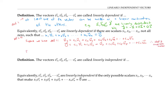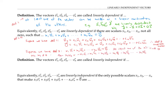Conversely, suppose we have the condition in definition two: we have an expression where all the x's aren't zero but the sum is zero. Then we can just find an x that's not zero — say x4 is not zero — and use that to solve for v4 in terms of the other v's. We write x4 times v4 in terms of all the other v's, then divide both sides by x4, which is nonzero, to isolate v4 and get v4 as a linear combination of the other vectors. That is exactly the condition needed for definition one.